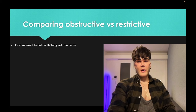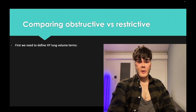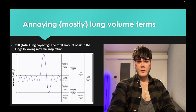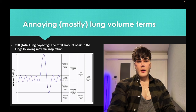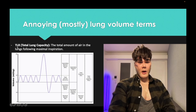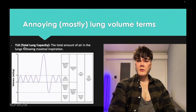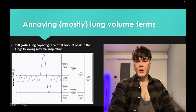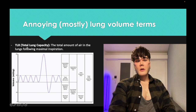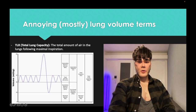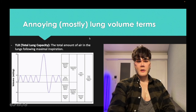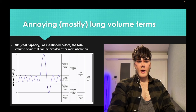Before comparing the two, let's cover lung volumes. Total lung capacity is the amount of air in the lungs — increased in obstructive, decreased in restrictive. Vital capacity is the total amount you can inspire, not including residual volume. Tidal volume is air in and out during normal casual breathing. Inspiratory capacity is the max you can inspire after a normal exhalation.